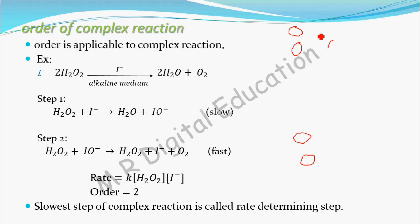In the relay game, winning depends upon the person who runs slow. The person who runs very slowly will definitely cause the team to lose the match. If that slow person runs a little bit faster, they will win. Suppose this last person is running very slowly but all the other members run fast — the whole match depends upon this one slow person. If he runs a little bit faster, they will win.